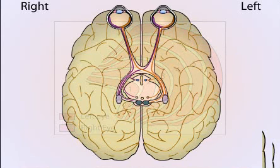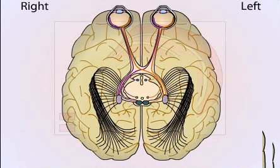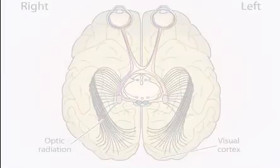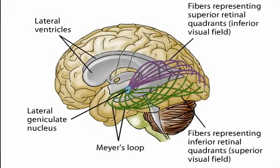From the lateral geniculate nucleus, visual information is relayed to the visual cortex. Most of the axons from LGN neurons form the optic radiations, which terminate in the visual areas in the occipital cortex at the back of the brain. In this lateral view of the brain, axons carrying information about the superior portion of the visual field sweep around the lateral horn of the ventricle in the temporal lobe — a branch called Myers loop — before reaching the occipital lobe. Axons carrying information about the inferior portion of the visual field travel in the parietal lobe.